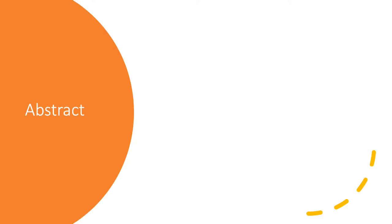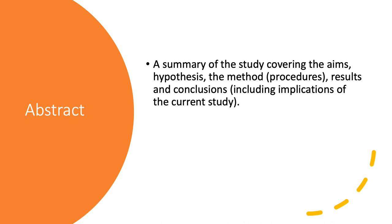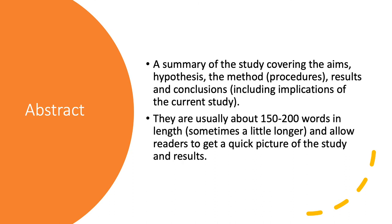So, firstly, we have our abstract. This is a summary of the study. So, we look at the aims, the hypotheses, the method that we used, the results, the conclusions, including any implications of the current study, so what it could mean to the wider population. These are usually about 150 to 200 words. Sometimes they're a little bit longer. And it's just really useful so that the reader just gets a really good idea of what the study and the results were. And you'll read millions of abstracts if you're thinking about university, when you're doing literature reviews, etc. Just to make sure that before you read the whole journal article, that the study is actually showing what you want it to show.